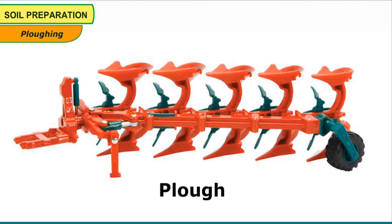A plow is made of wood or iron and is drawn by a pair of bulls or other animals. It contains a strong triangular iron strip called a plowshare. The main part is a long log of wood called a plow shaft. There is a handle at one end of the shaft, and the other end is attached to a beam which is placed on the animal's neck. The original wooden plow has been slowly replaced by an iron plow.